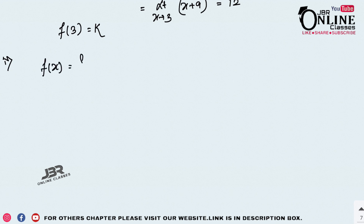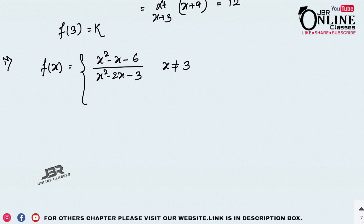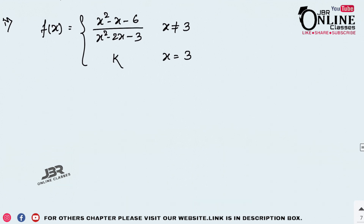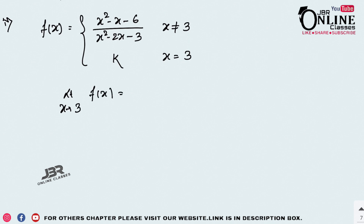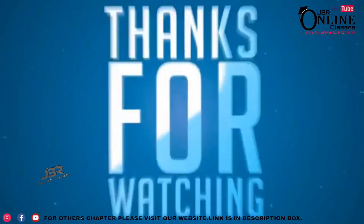Sum 10, part 4: f(x) = (x² - x - 6) / (x² - 2x - 3) when x ≠ 3, and k when x = 3. Factorizing the numerator gives (x - 3)(x + 2) and the denominator gives (x - 3)(x + 1). Cancelling gives (x + 2)/(x + 1). The limit as x → 3 is 5/4, so k = 5/4.